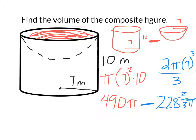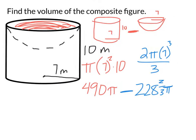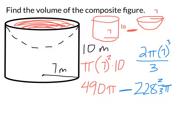We don't really want to have fractions with pies, but whatever. So now I can put this into my calculator. 490 pi minus 228 and 2 thirds pi.